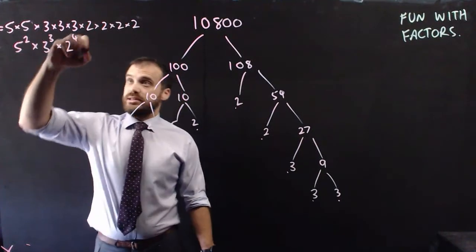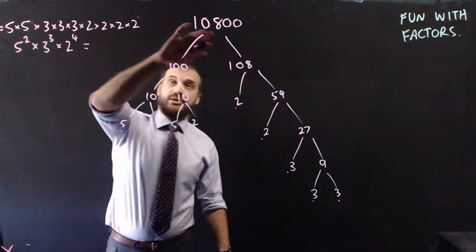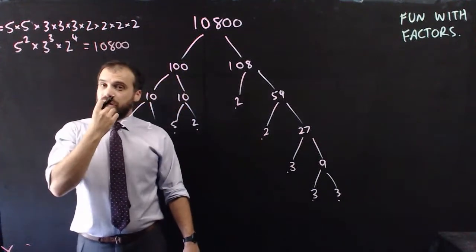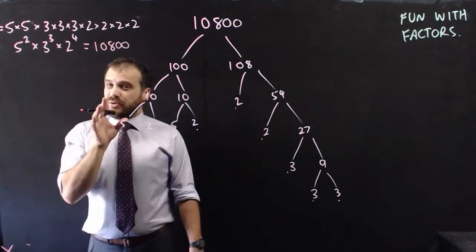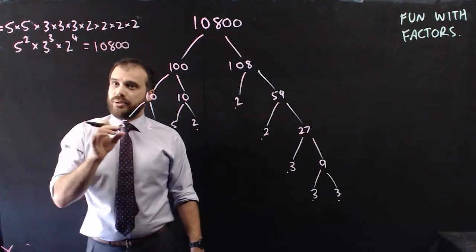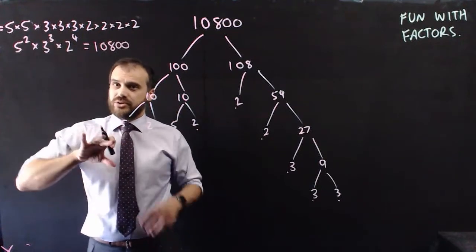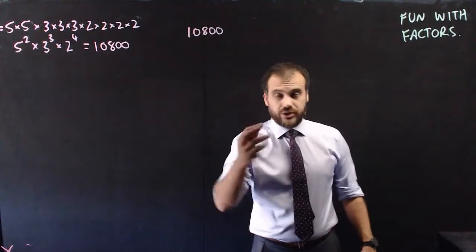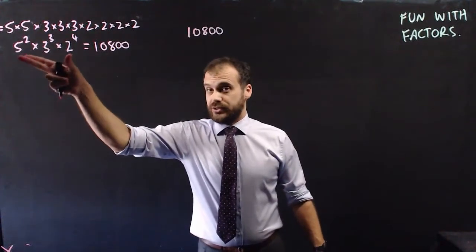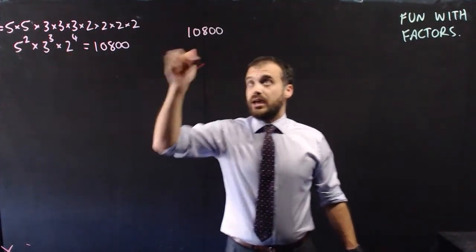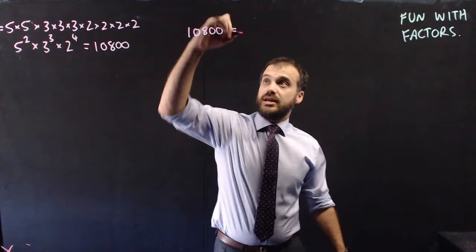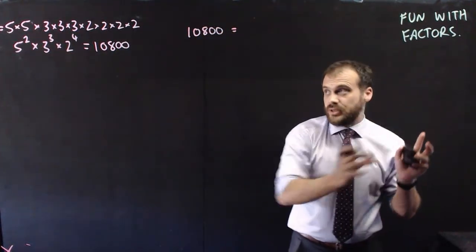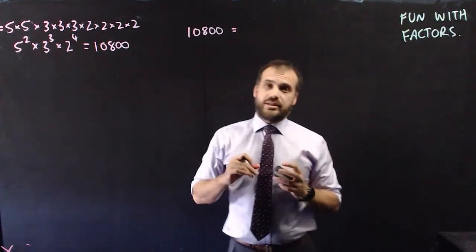That number is the same as the thing we started with — 10,800. Now I'm going to talk about how we can split up 10,800 in many different ways. What I can do is take our prime factorization and express 10,800 as something times something by using all of these prime factors.